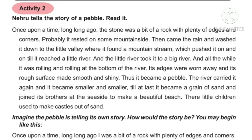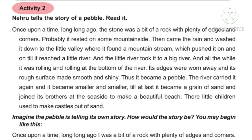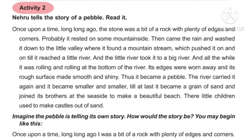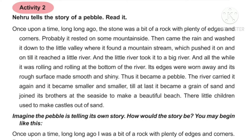Activity 2. Nehru tells the story of a pebble. Read it. Once upon a time, long long ago, the stone was a bit of rock with plenty of edges and corners. Probably it rested on some mountain side. Then came the rain and washed it down to the little valley where it found a mountain stream which pushed it on and on till it reached a little river. And the little river took it to a big river. And all the while it was rolling and rolling at the bottom of the river. Its edges were worn away and its rough surface made smooth and shiny. Thus it became a pebble. The river carried it again and it became smaller and smaller till at last it became a grain of sand and joined its brothers at the seaside to make a beautiful beach.